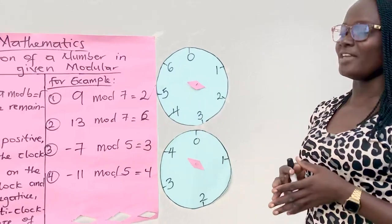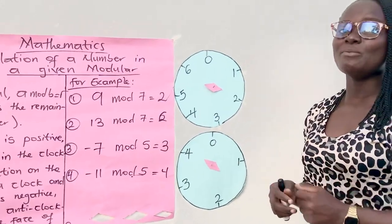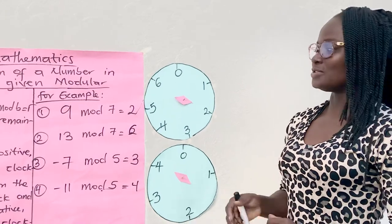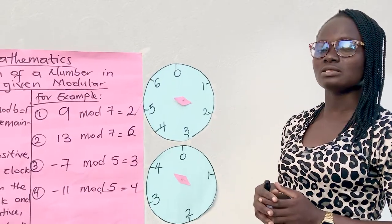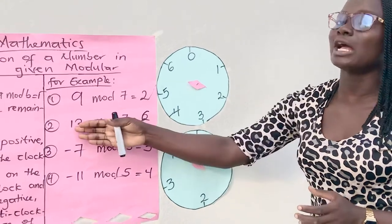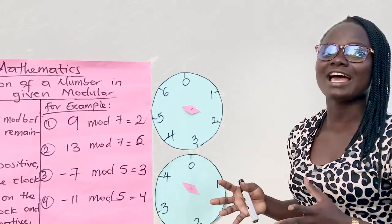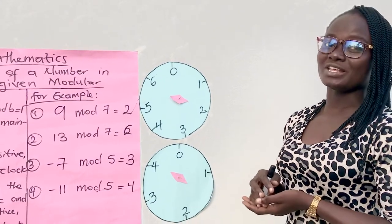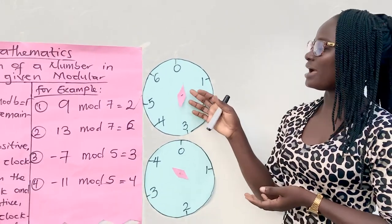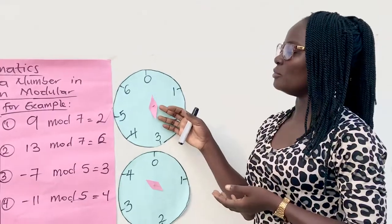The second I have here is 13 mod seven. It means that our division should have seven divisions. Then we move in the clockwise direction. How many times? 13 times, starting from zero. Let's go through together. We come back to our zero, then we move 13 times.